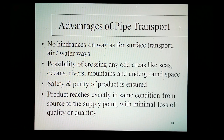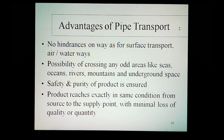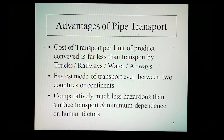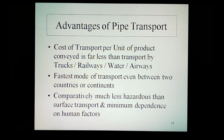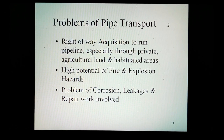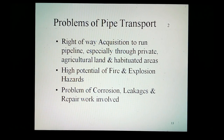Safety and purity of the product is ensured — the product reaches exactly in the same condition from source to the supply point with no loss of quality or quantity. Cost of transport per unit of the product conveyed is less than transport by trucks, railways, water, or airways. Fastest mode of transport even between two countries or continents. Comparatively much less hazardous than surface transport with minimum dependence on human factors. There are of course certain disadvantages, but they are offset by the advantages to a large extent, making them negligible as far as safety and technical-economic aspects are concerned.